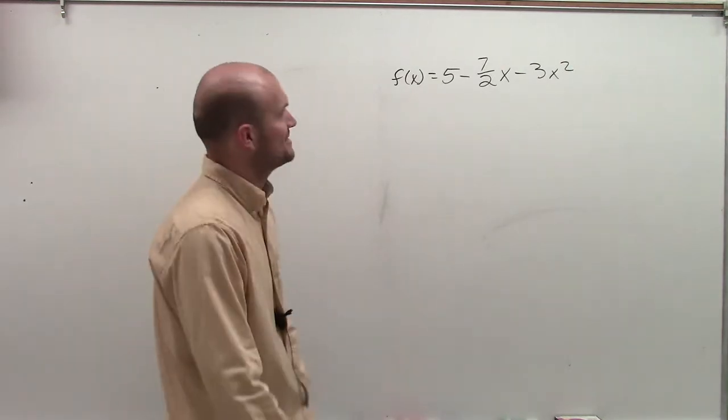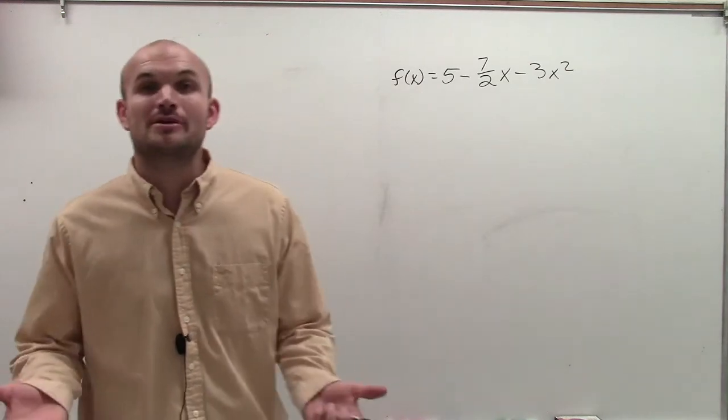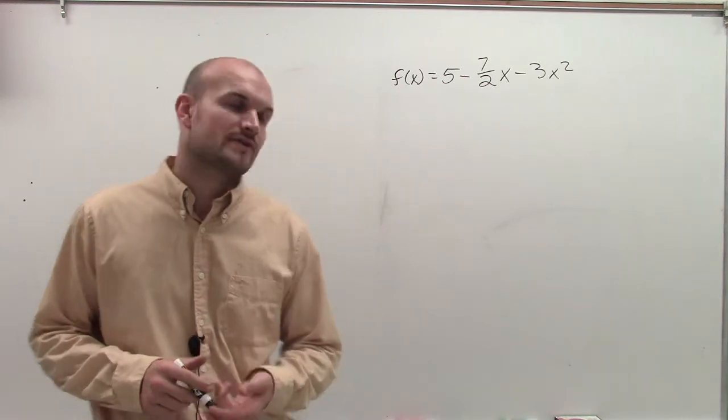We have f(x) equals 5 minus 7 halves x minus 3x squared. So in determining end behavior, we're concerned about the degree, and we're also concerned about the leading coefficient.